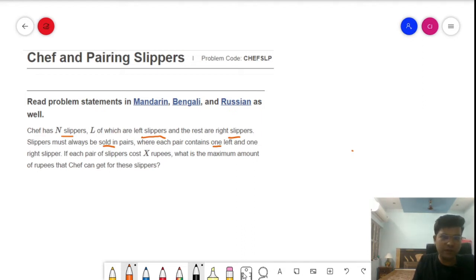Each pair consists of one left and one right slipper. Obviously one will be the left slipper and another one will be the right slipper. If each pair of slippers cost X rupees, what is the maximum amount of rupees that Chef can get from these slippers?